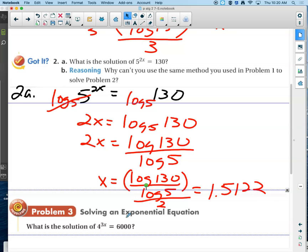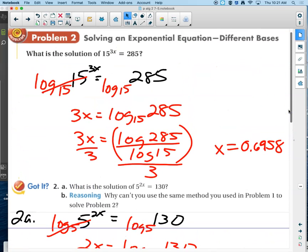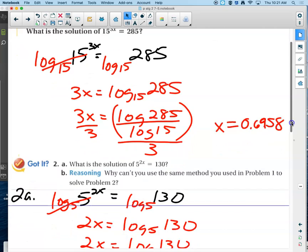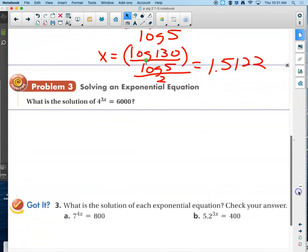Now for 2b, it says why can't you use the same method in problem 1 to solve problem 2? Well, notice how the bases are different in all of these? We took logarithm base 5 for this one because it made sense, because this was a 5. We took logarithm base 15 in this one because then they're going to cancel out. We'll be able to use our inverses there. So they had different bases. That's why we didn't use the same method. Different bases.